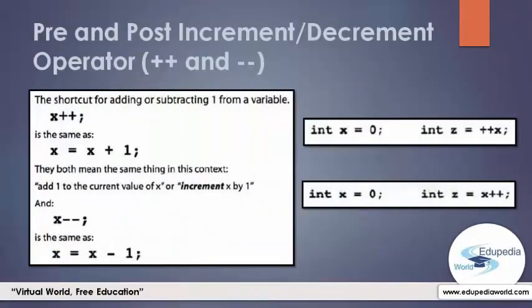Now let's talk about the increment operator, and there is also a decrement operator, which uses two minus marks. If you use the increment operator after a variable, that is called post increment. If you use the decrement operator after a variable, that is called post decrement. If you use the increment operator in front of a variable, that is called pre increment. If you use the decrement operator in front of a variable, that is called pre decrement. For example, x++ is a post increment expression, the same as x equals x plus 1. And x-- is a post decrement expression, the same as x equals x minus 1.